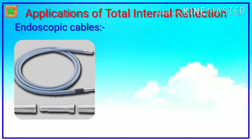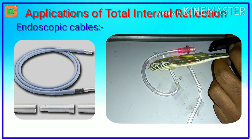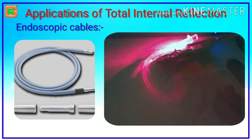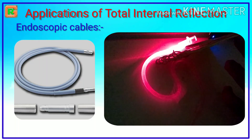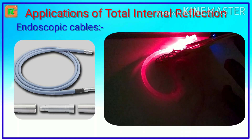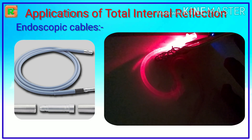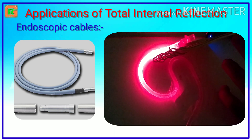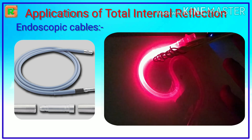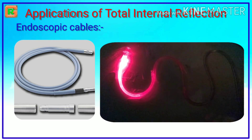Endoscopic cables. The doctor inserts an optical fiber pipe into the stomach through the mouth. Light is sent down through one set of fibers in the pipe, which illuminates the inside of the stomach. The light from the inside travels back through another set of fibers in the pipe, and the viewer gets the image at the outer end. As you can see in this activity, the light ray is bending through the curved water pipe.